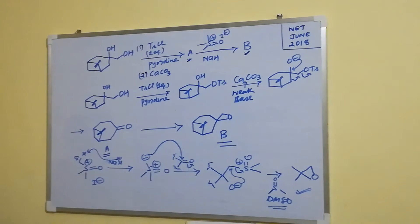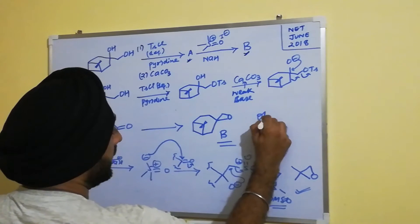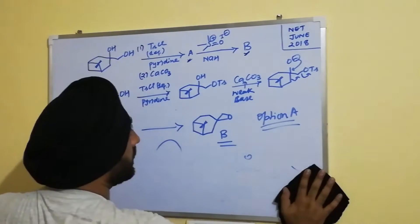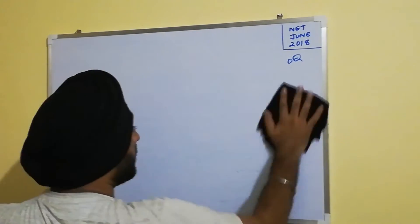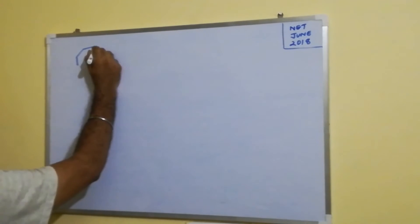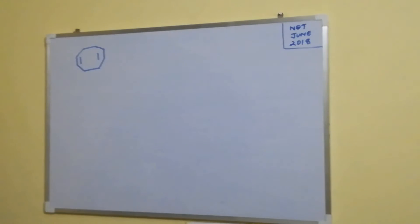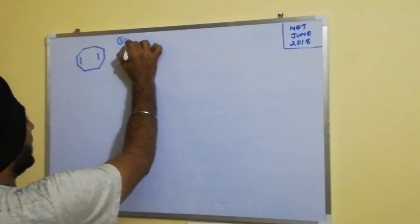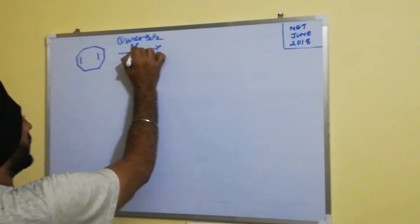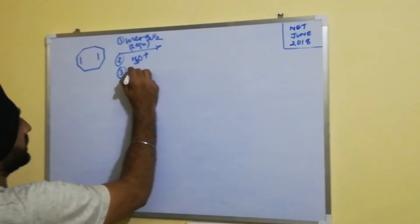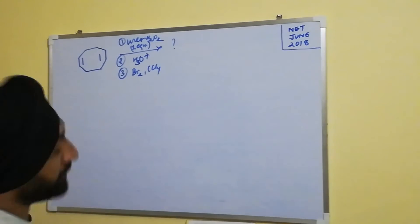So we end up getting an epoxide as product B. These are the correct options A and B for the question. Now let's look at another problem where the substrate is 1,5-cyclooctadiene, treated first with urea-H₂O₂, one equivalent, followed by acidic water, and then bromine in CCl₄.